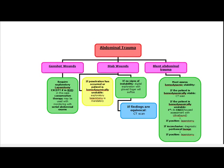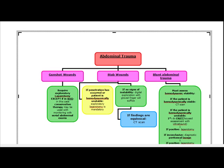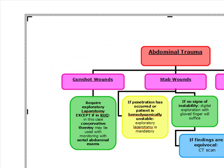My next topic is abdominal trauma. Starting with gunshot wounds — we all know the standard approach is exploratory laparotomy. However, the test will ask about right upper quadrant gunshot wounds. In that case, we use conservative therapy: serial abdominal exams. If a patient comes in with a gunshot wound to the right upper quadrant, you do not go to laparotomy — you go to serial abdominal exams. This is a common mistake students make.